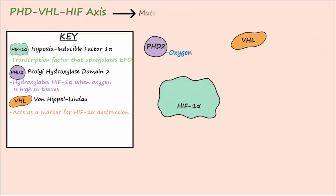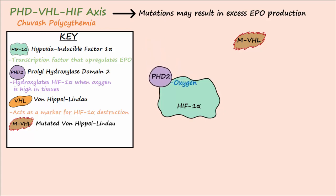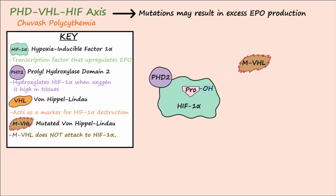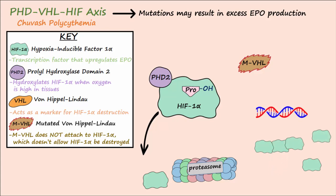Mutations in different components of this axis may result in excess EPO production and polycythemia. One example is Chuvash polycythemia, which results from a mutation in VHL. This mutated VHL will not attach to HIF-1-alpha, so HIF-1-alpha is not targeted for destruction by the proteasome. HIF-1-alpha levels rise and cause an increase in EPO despite normal oxygen levels.